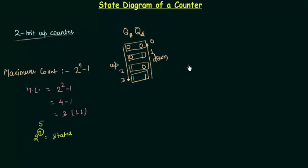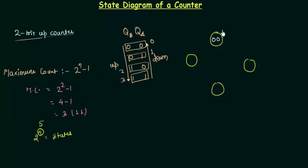Let's make these states first, then we will see how the transition is taking place. I draw the first state, second state, third state, and fourth state. The first state is 0 0, where this 0 is QA and this 0 is QB — the outputs of my flip flops. Then I have 0 1, 1 0, and 1 1. If I am on 0 0, for the next clock pulse I will be on 0 1.